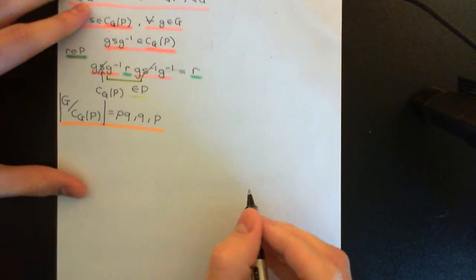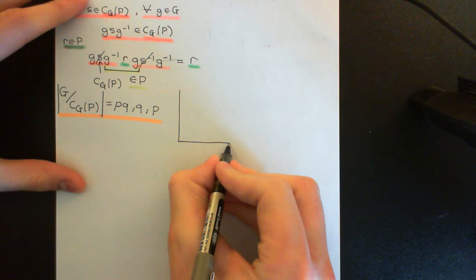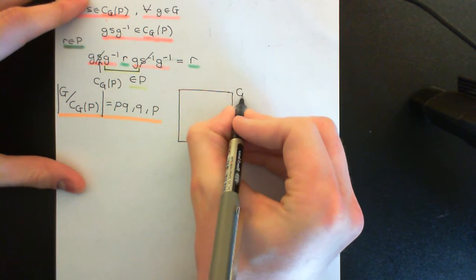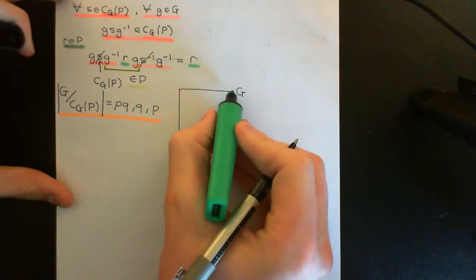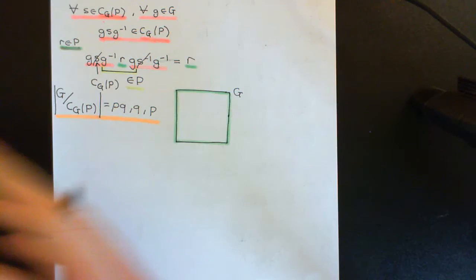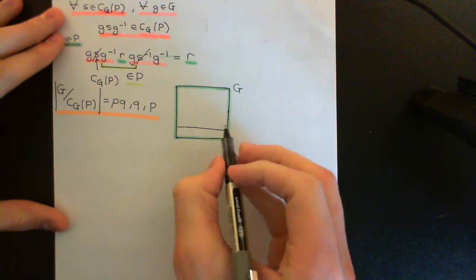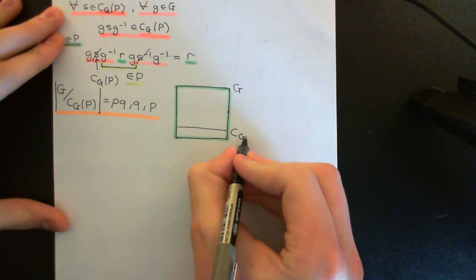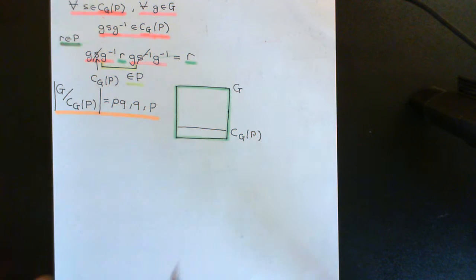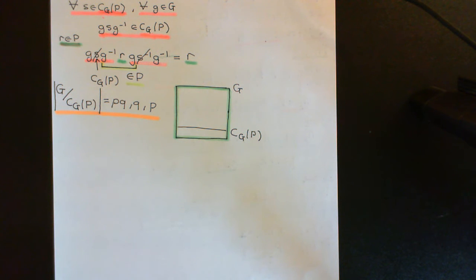Let me draw a picture. We'll have our group shown by this box here — this will be the entire group, capital G — and I'll colour that in green. Then we'll mark on the subgroup, which is the centraliser of P in G. Let me give you a little more insight into what the centraliser of P in G truly is. Capital P is a subgroup of G. The centraliser of capital P in G is all of those elements which, when they conjugate the entire subgroup capital P, fix absolutely every single element.